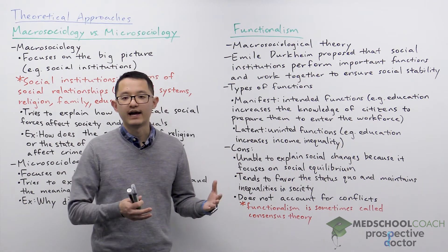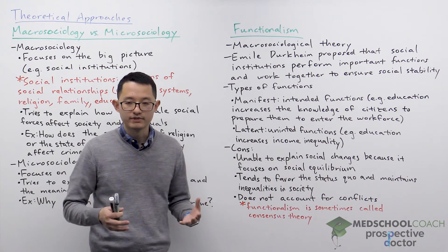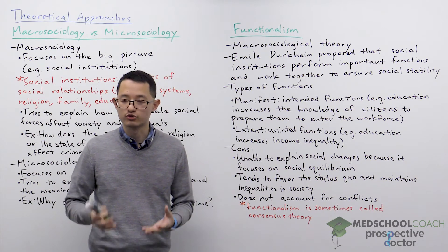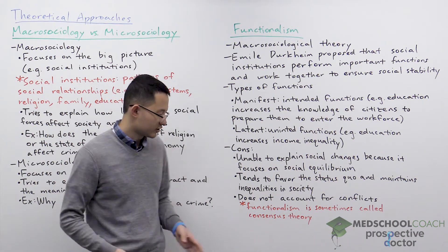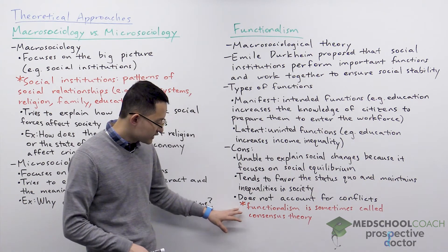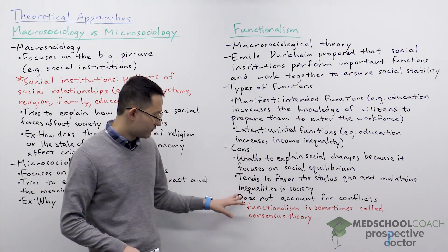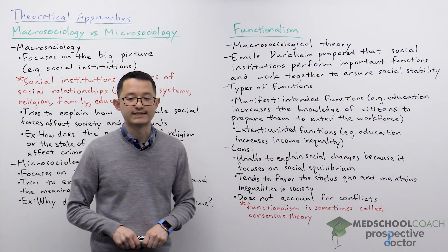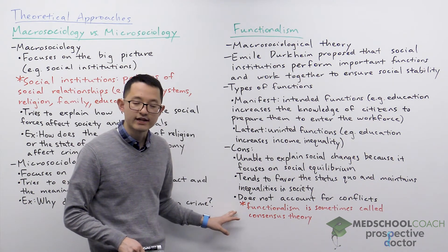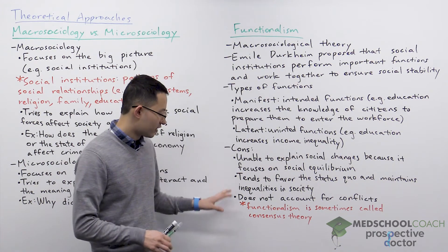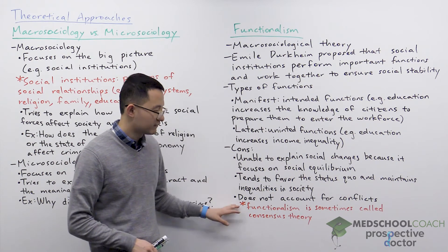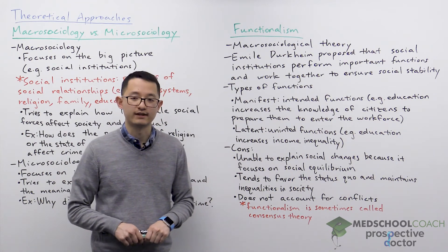During the time that functionalism was being developed, there were revolutions going on where substantial social changes were occurring quickly. Because it doesn't account for conflicts, functionalism is sometimes also called consensus theory. In subsequent videos, we're going to discuss one of the theories that arose due to these shortcomings of functionalism — and one of those theories is conflict theory.